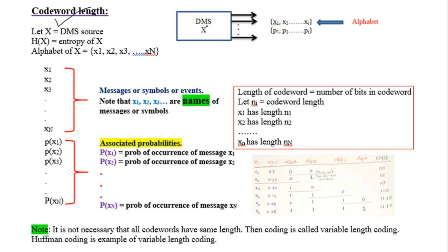Now, codeword length of different messages. X is the source with messages X1, X2, X3, and so on. These are the names of the messages or symbols. They have probability statistics - X1 has probability P(X1), and so on. The length of the codeword means the number of bits in the codeword.